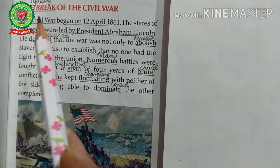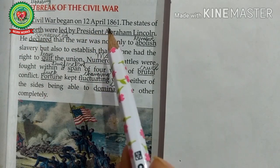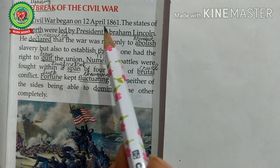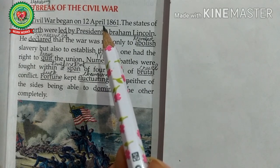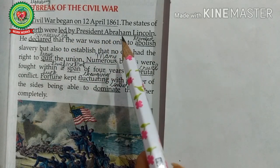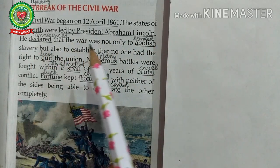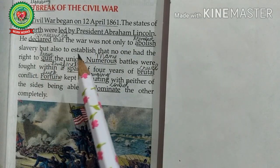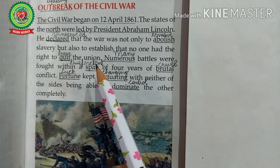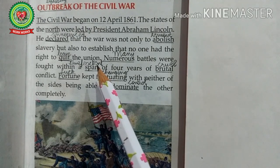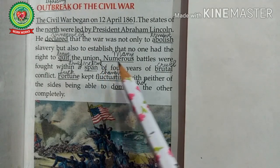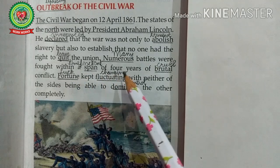Reading from the book — Outbreak of the Civil War: The Civil War began on 12 April 1861. This war started at Fort Sumter in South Carolina. The Confederates attacked the federal troops who were stationed at Fort Sumter. The states of the north were led by President Abraham Lincoln. He declared that the war was not only to abolish slavery but also to establish that no one had the right to quit the Union.